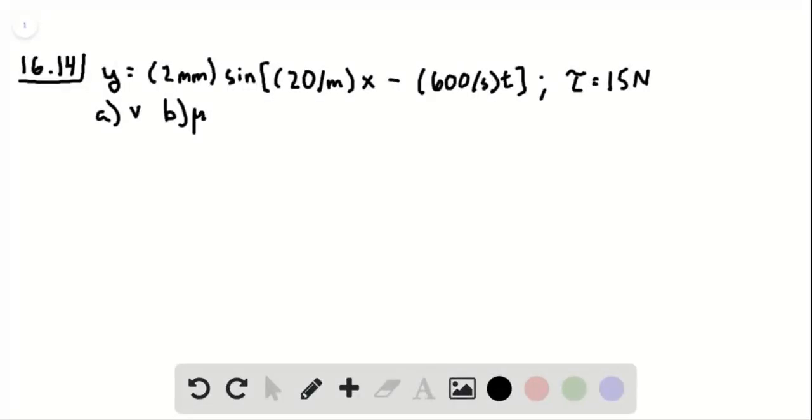Problem 16.14: We have a transverse wave on a string. Its amplitude is 2 millimeters, angular wave number is 20 radians per meter, and angular frequency is 600 radians per second. The tension in the string is 15 newtons. We want to find the wave speed and the linear density of the string in grams per meter.